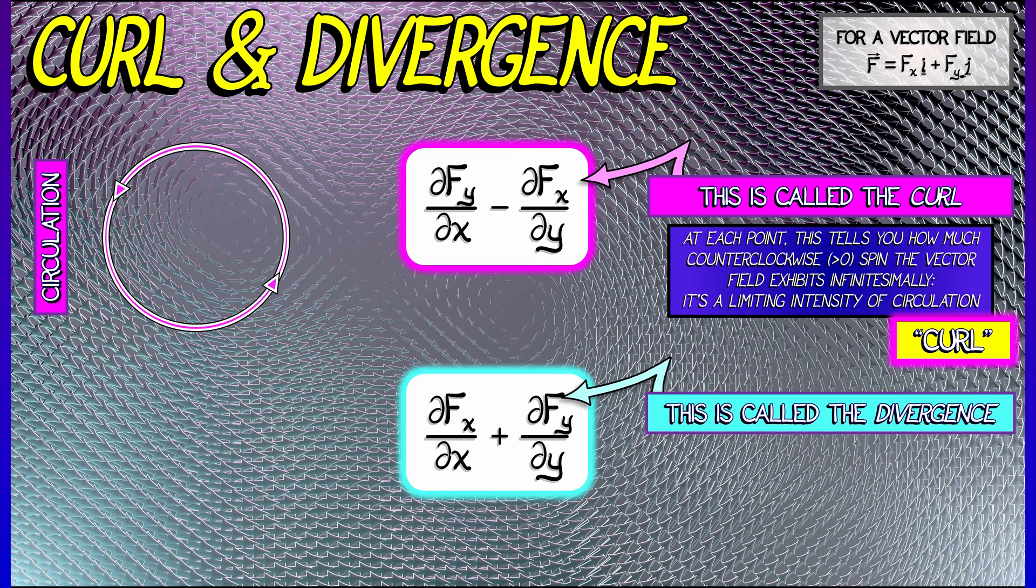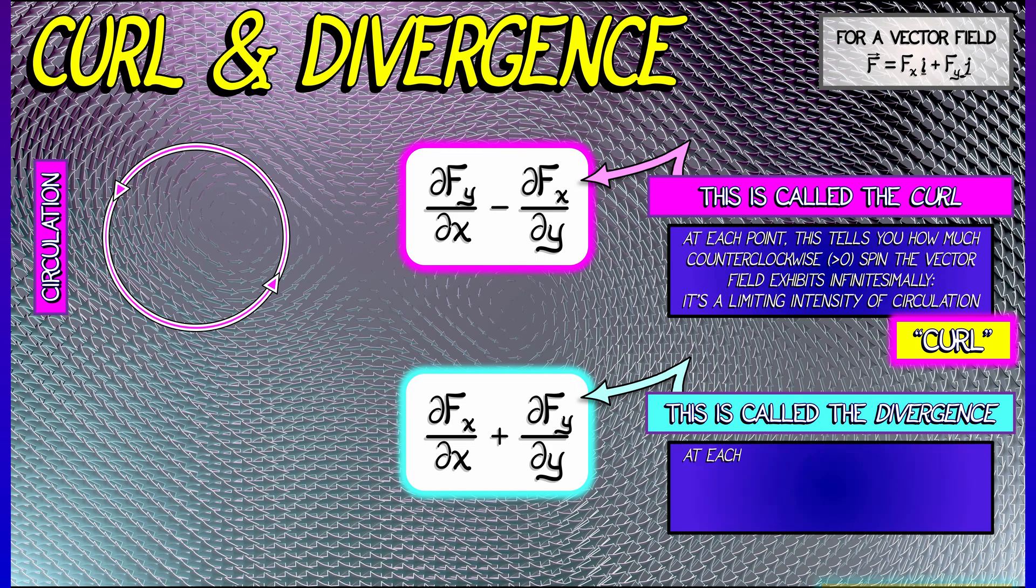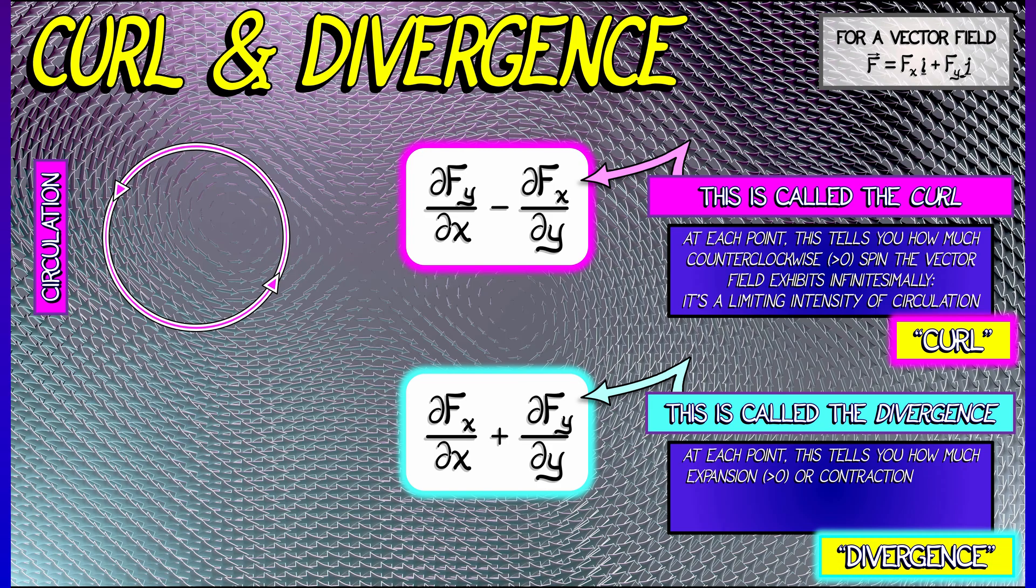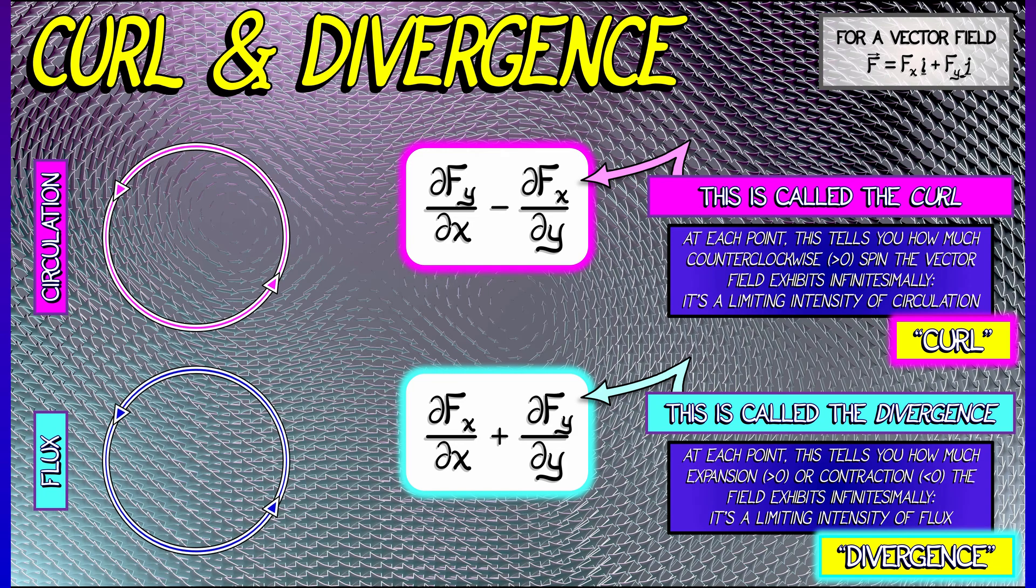Now, the second term, likewise, has an interesting meaning. This is called the divergence of the vector field. And what this is telling you at every point is an infinitesimal flux, whether there's more stuff going out than going in, that's positive divergence, or more stuff going in than going out, that is negative divergence.